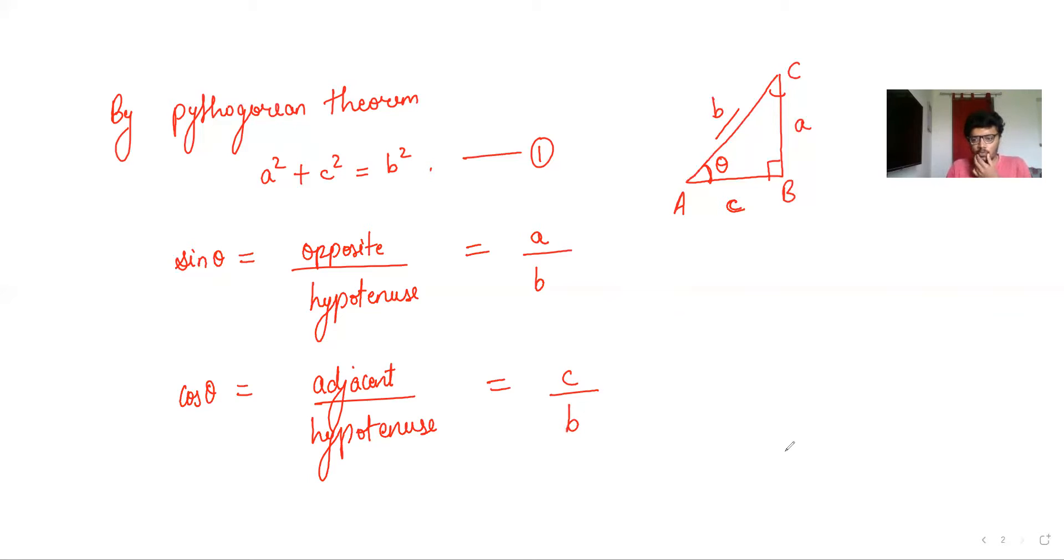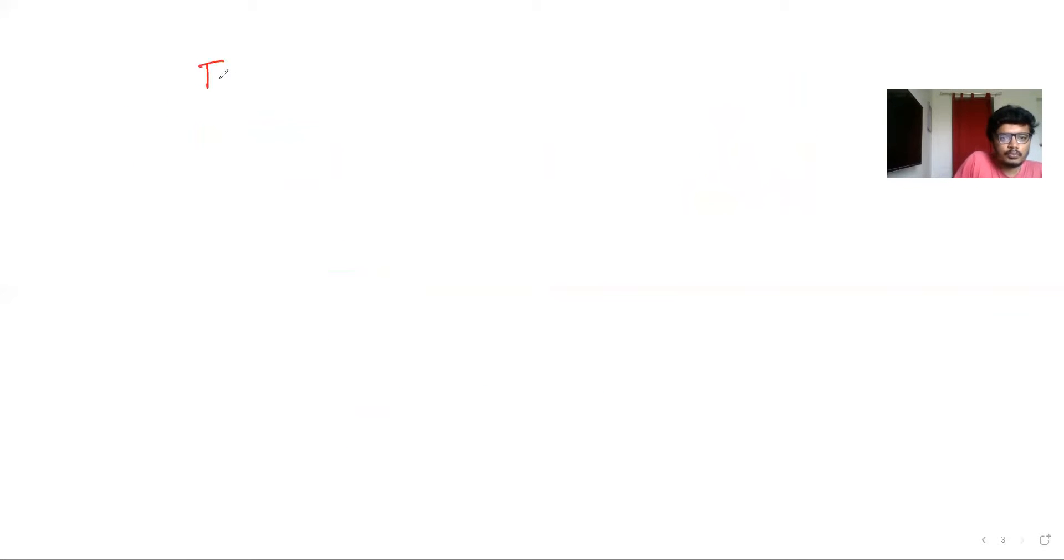Now we have to prove sin²θ + cos²θ = 1. So let's start with the left hand side.